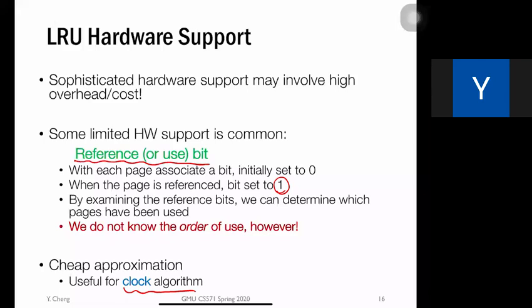The trade-off is we lose some information because we don't know the exact order of use — this is state information we cannot keep track of with this simple approximation. However, the advantage is it is really fast and incurs nearly zero negligible runtime performance overhead.